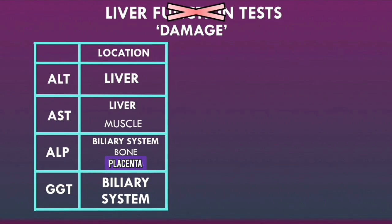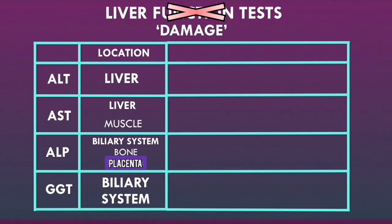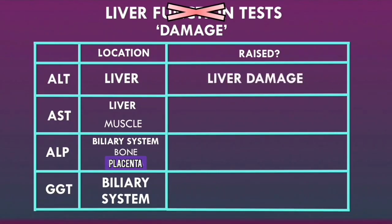A raised ALT indicates some form of liver damage. Since ALT enzymes are mainly located within the hepatocytes, when there is damage to the hepatocytes, the ALT enzymes leak out into the blood, causing a raised ALT. Because ALT is very specific to the liver, a raised ALT is highly specific for liver damage. The ALT will typically be raised in any type of liver damage, including any form of hepatitis or inflammation of the liver.